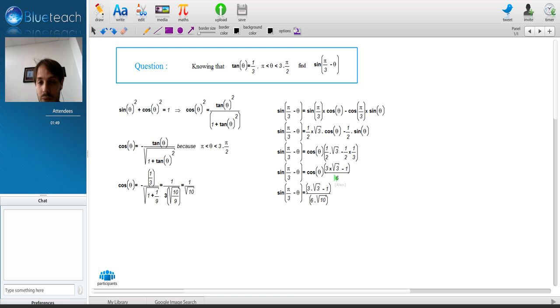At this step, we have sine pi divided by 3 minus theta equal to cosine theta times something.